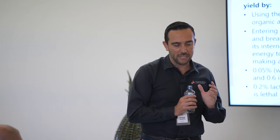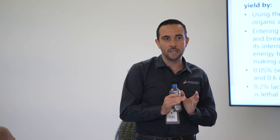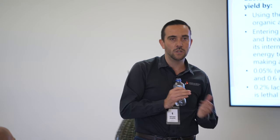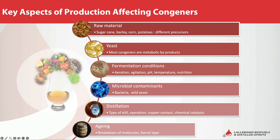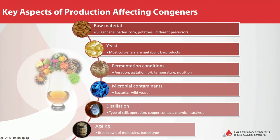Key aspects for the production of congeners: raw material is very important — the maturity of the agave, the region, highlands, lowlands, etc. The yeast profile differs between a champagne yeast and a wine or rum yeast — the metabolism is different. Fermentation conditions — whether we are aerating, using agitation, controlling pH, temperature, etc. And contamination. Distillation process is also very important — pot still, copper pot stills, columns all differ. And finally, aging.